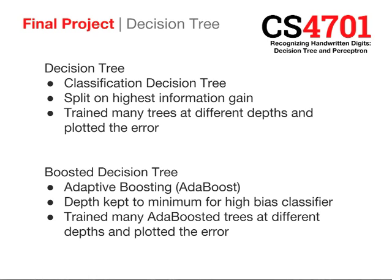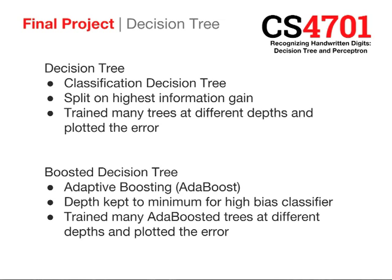The first decision tree we made was a simple classification decision tree, split on the highest information gain — similar to what we did in class. This method was only able to achieve 78% accuracy at best. We trained trees at many different depths and plotted the testing error. To improve accuracy, we boosted it using adaptive boosting, otherwise known as Adaboost. This required high-bias classifiers, so we kept the trees at shallow depth. Adaboost works by combining high-bias classifiers into one low-bias, low-variance classifier. We similarly trained the Adaboosted trees at different depths and plotted the error.